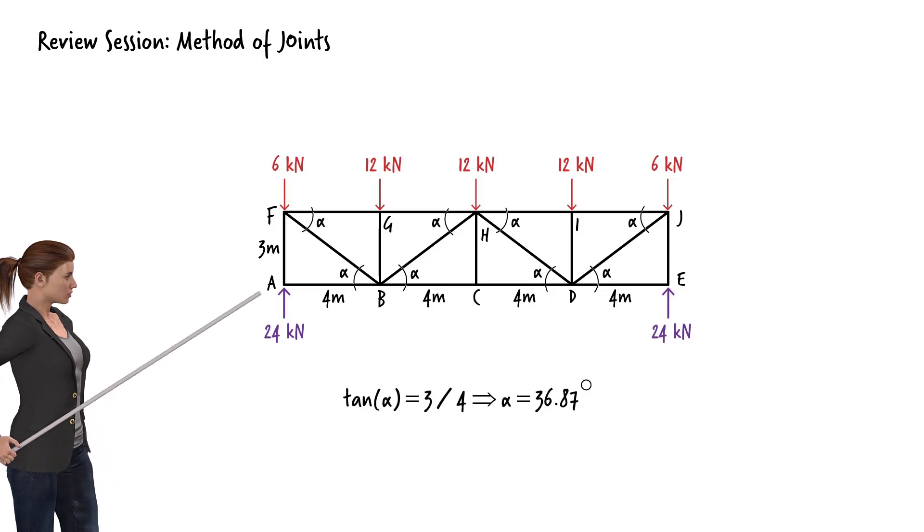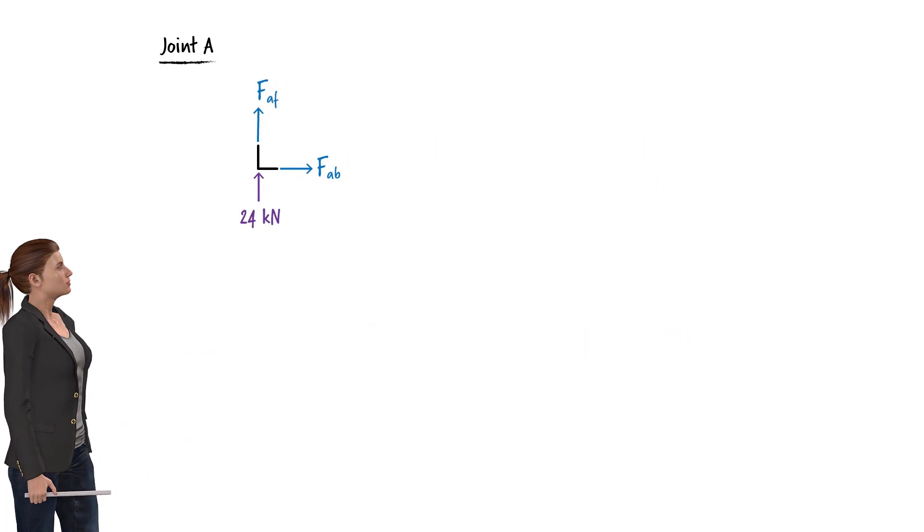A good starting point is joint A. Here is the free body diagram of the joint. I am showing the force in each member as a tensile force, meaning the force arrow is pointing away from the joint.